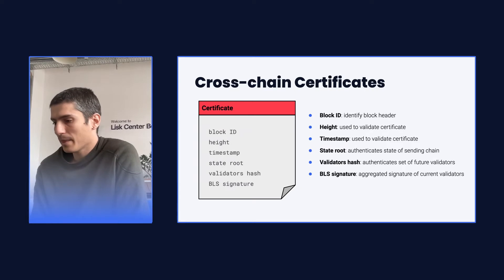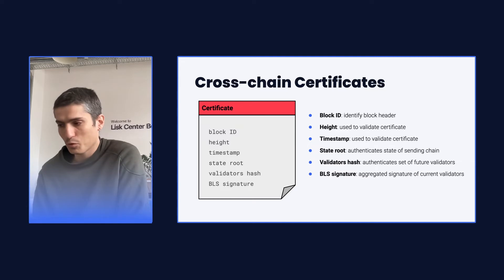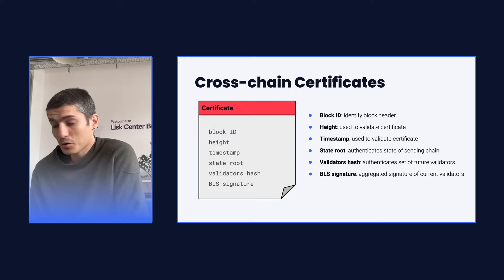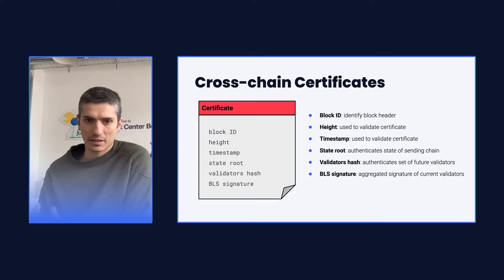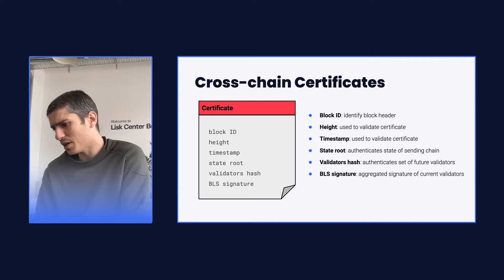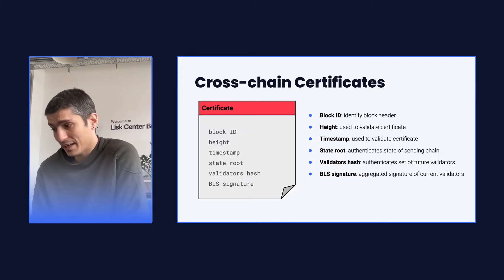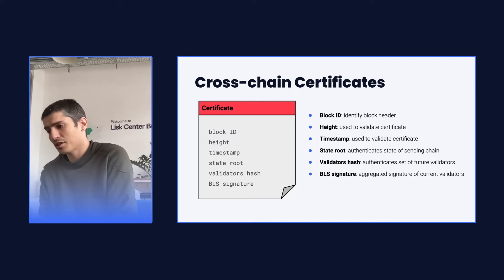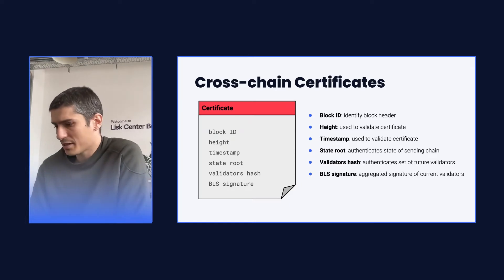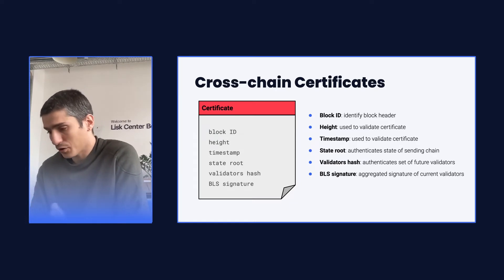Cross-chain certificates have the following properties. The block ID is just the identifier of the block header from which the certificate was created, and the height and timestamp are properties of this block header that are used to validate the certificate. You can only post a certificate if it is more recent than a previous one from the sending chain. The state root is there to authenticate the state of the sending chain, and the validator's hash is a short hash that authenticates the set of future validators. The BLS signature is just an aggregated signature from the current validator set.